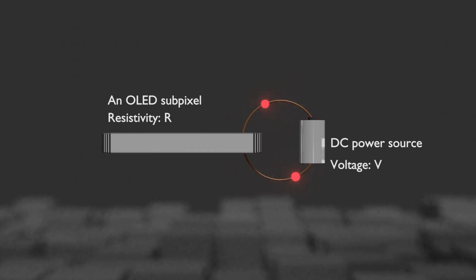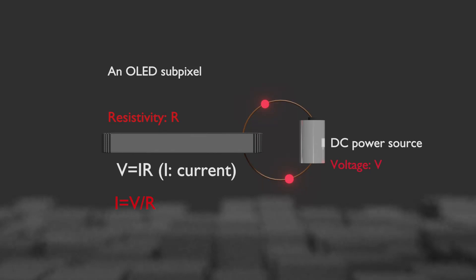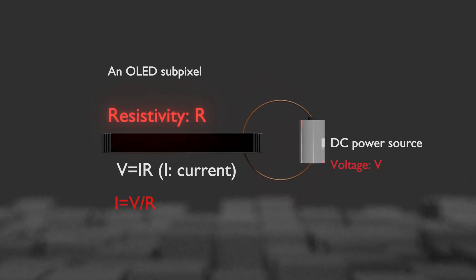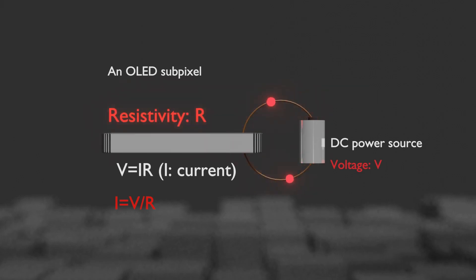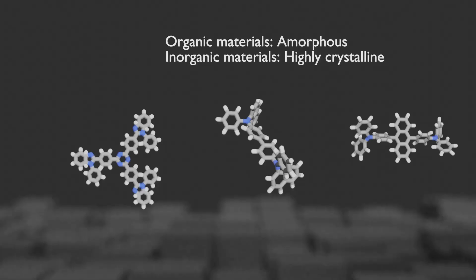Now let's take out one white subpixel and explain the root cause of burn-in. A white subpixel is a light-emitting diode made of organic material that emits light by injecting current; the brightness of this diode is proportional to the amount of injected current. Let's remember the formula V = IR from middle school. The equation can be converted to I = V divided by R. In other words, the amount of current injected into a device is proportional to the voltage and inversely proportional to the resistance.